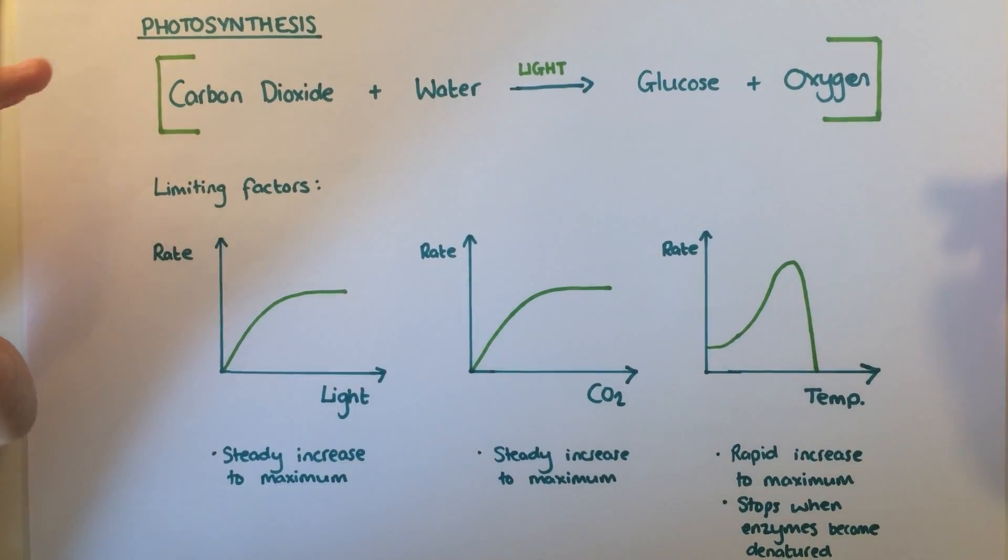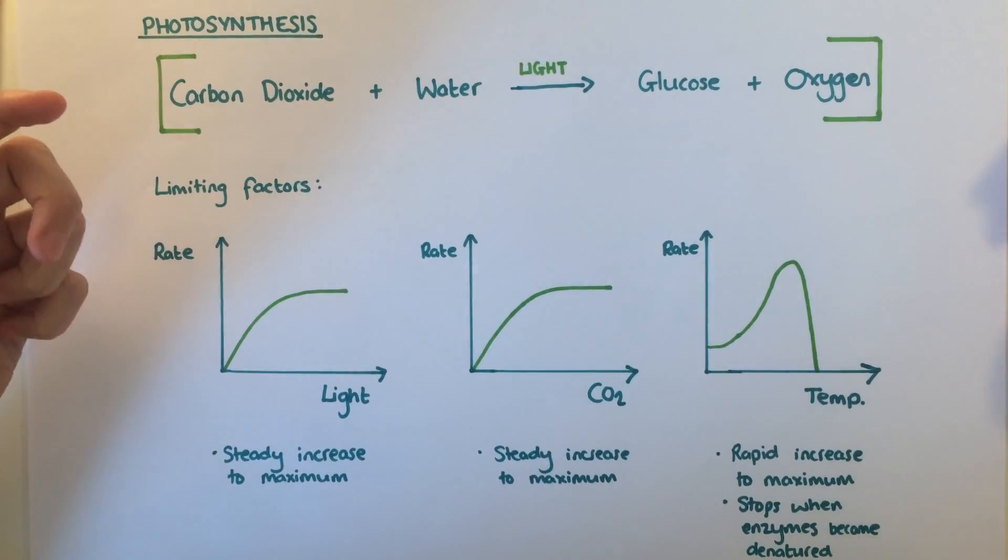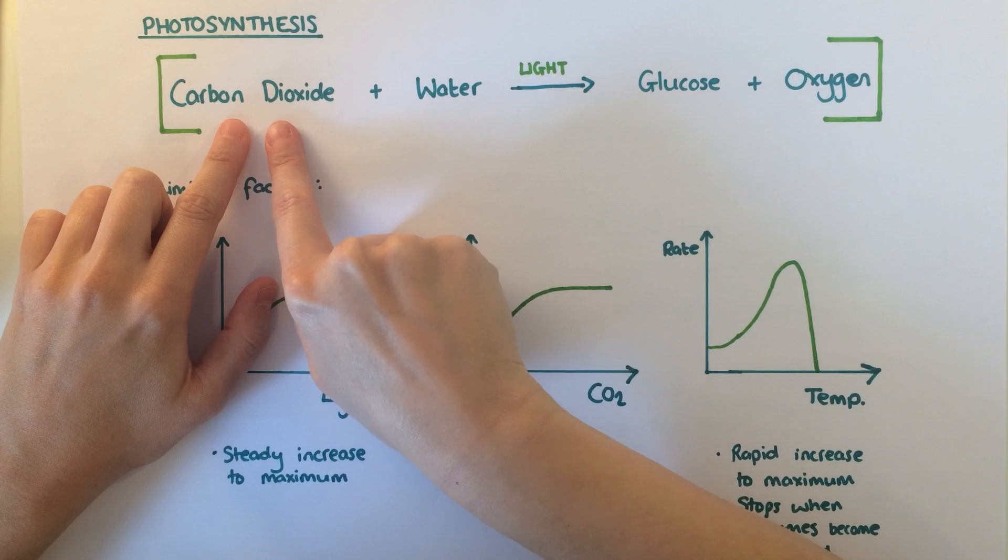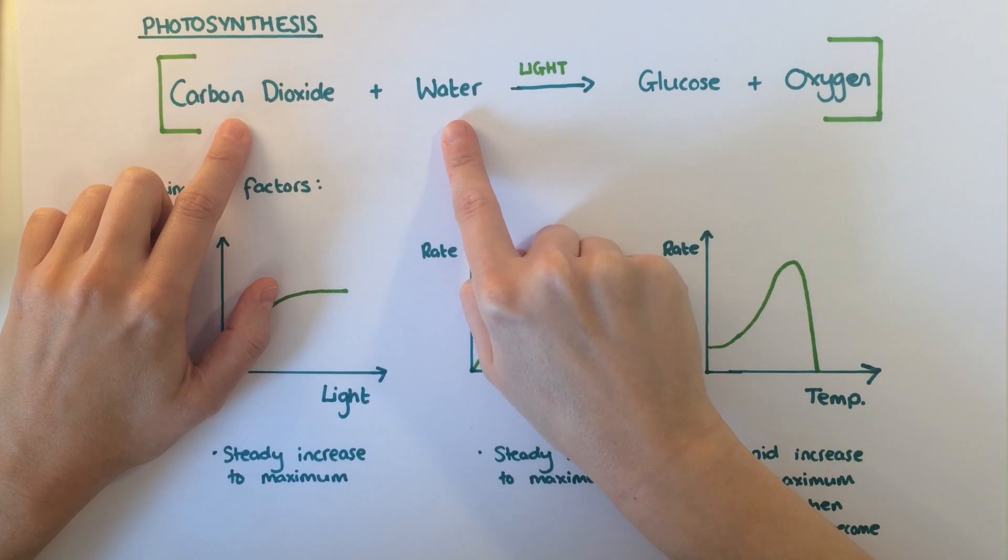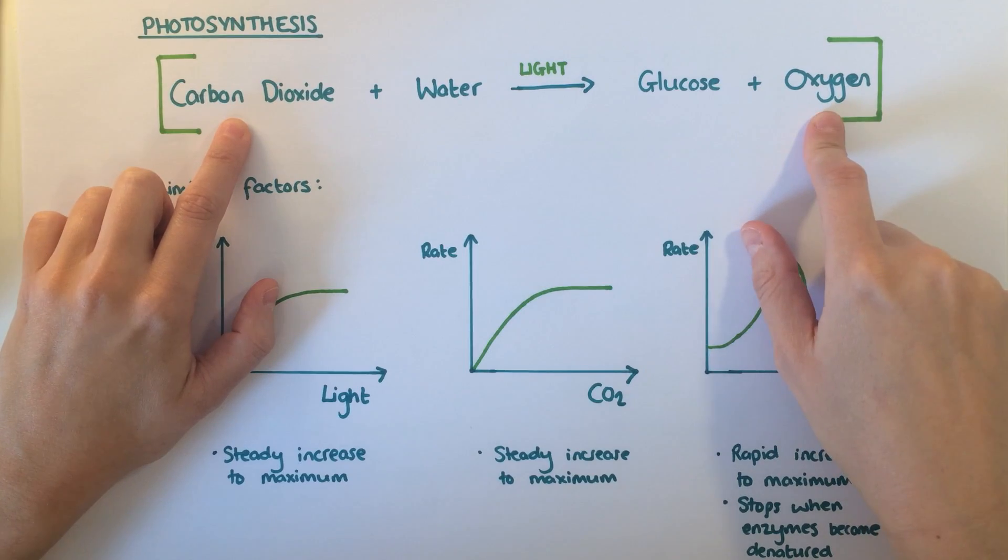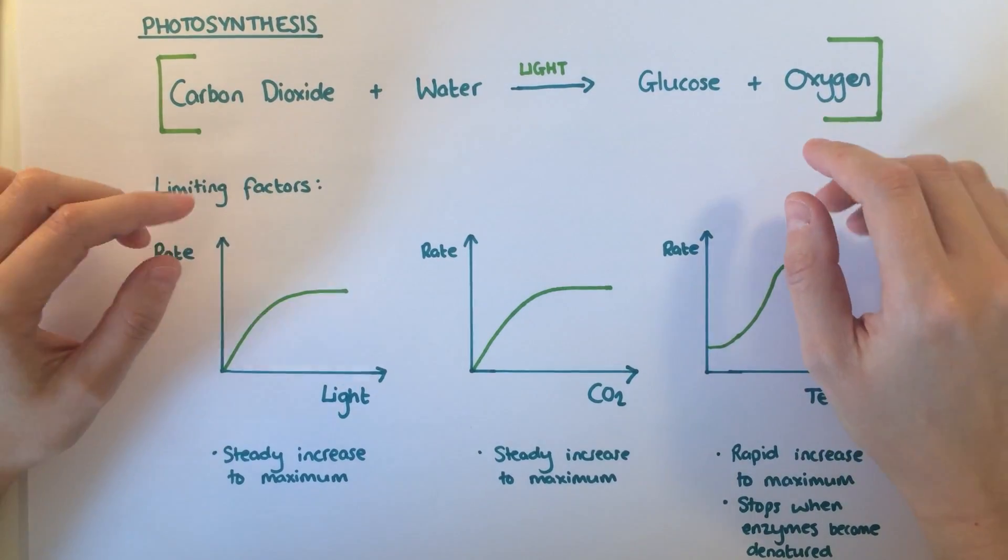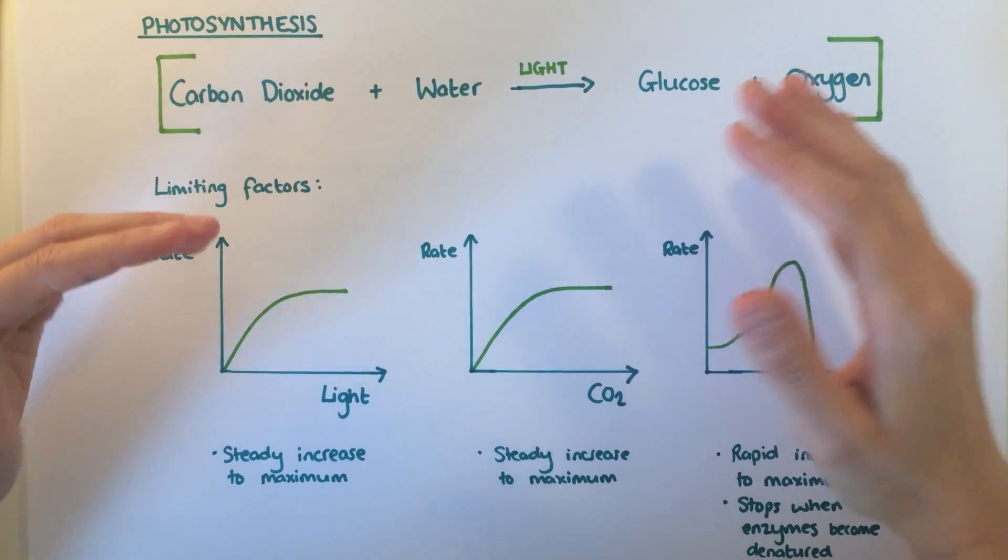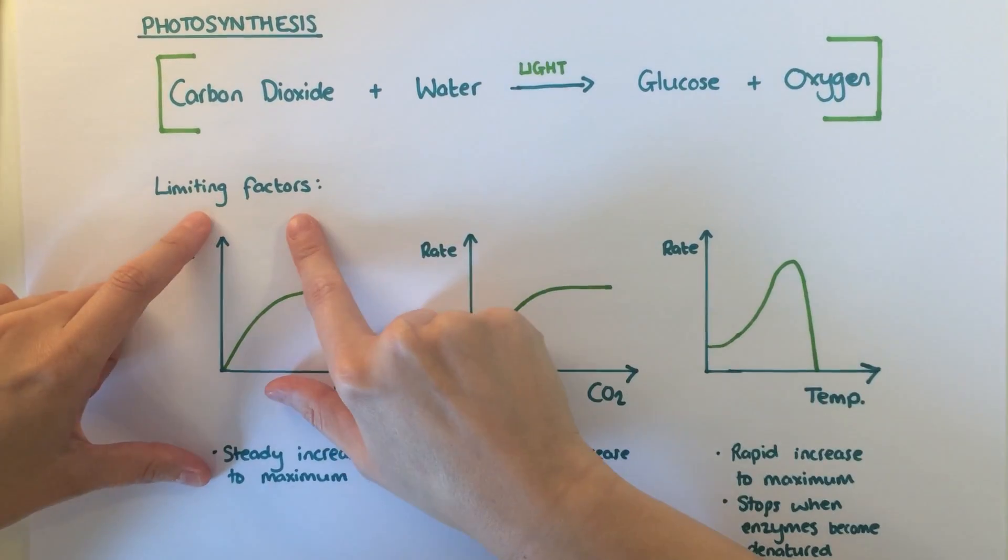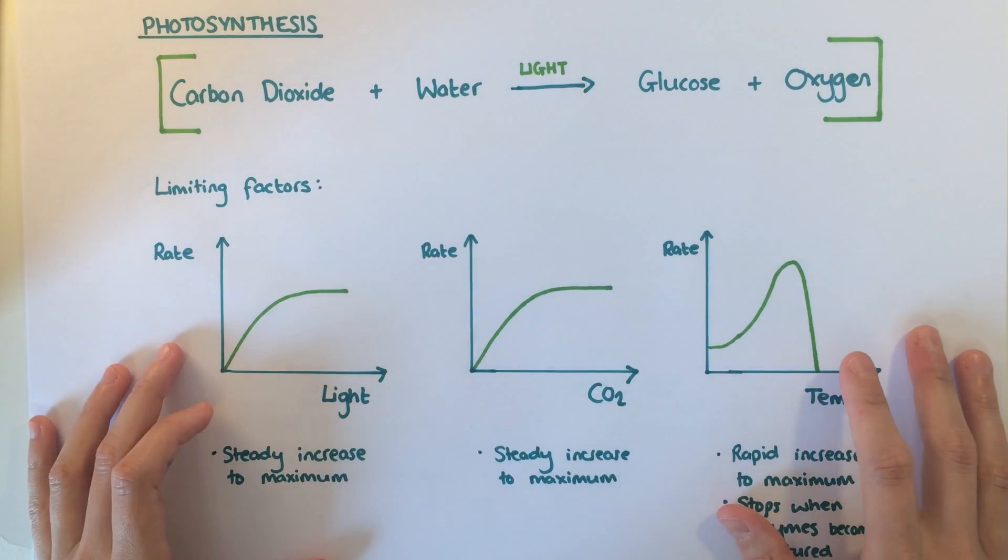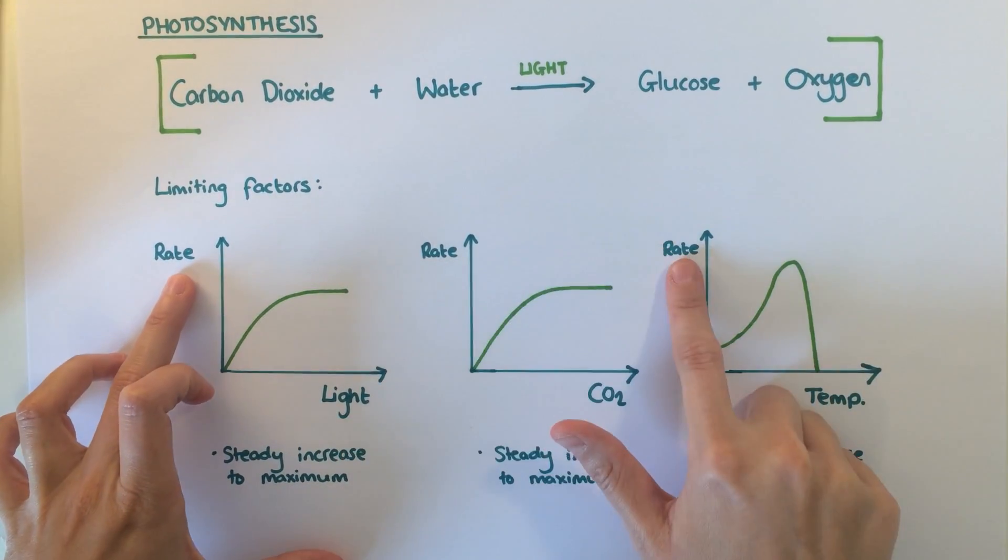Plants don't eat food, but they still need glucose for respiration and making proteins. They produce glucose using light energy in a process called photosynthesis. Carbon dioxide from the air and water from the ground react together using light energy to produce glucose and waste oxygen. The rate of photosynthesis depends on how much light, carbon dioxide, and water the plant has available and the temperature. These are called the limiting factors of photosynthesis. You need to be able to describe the graph shape showing how each of these factors affects the rate of photosynthesis.